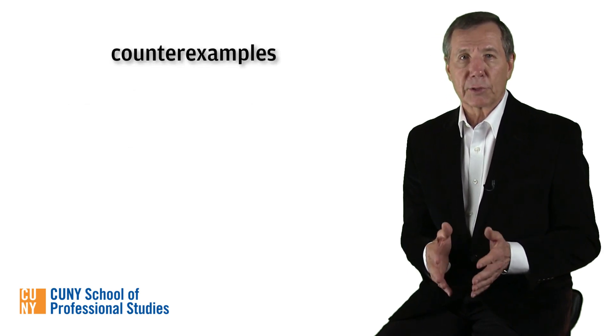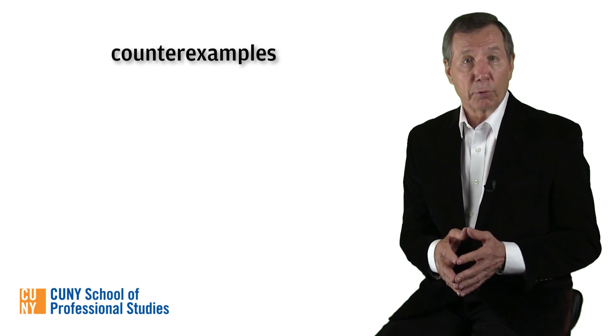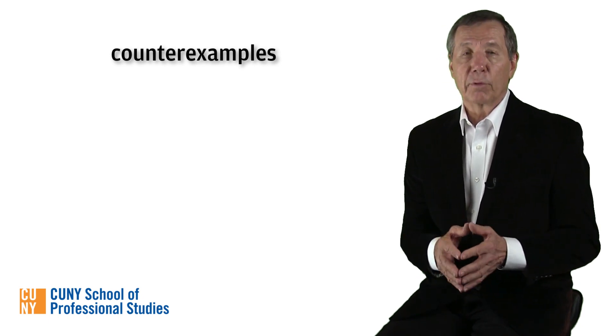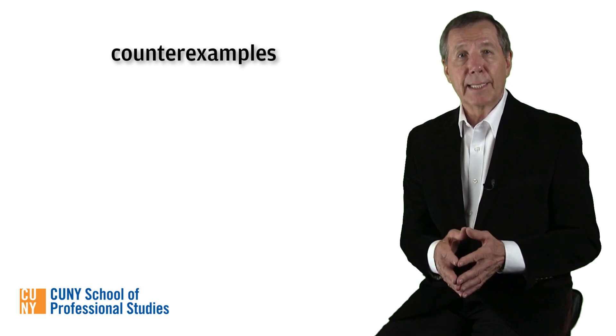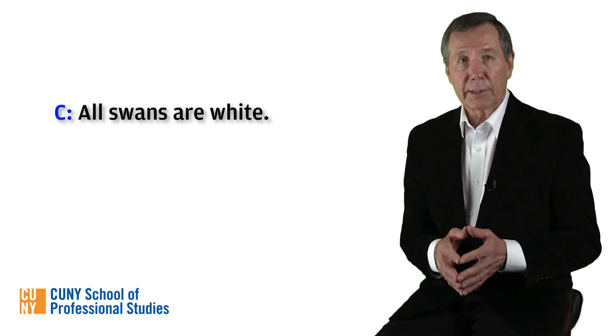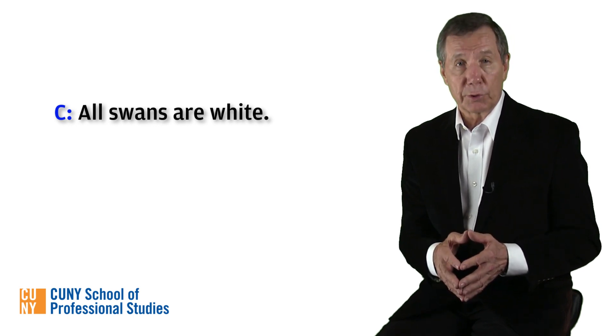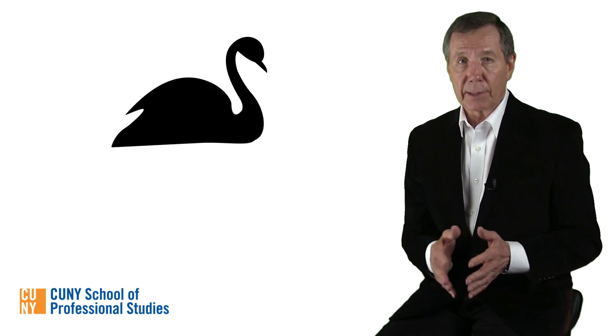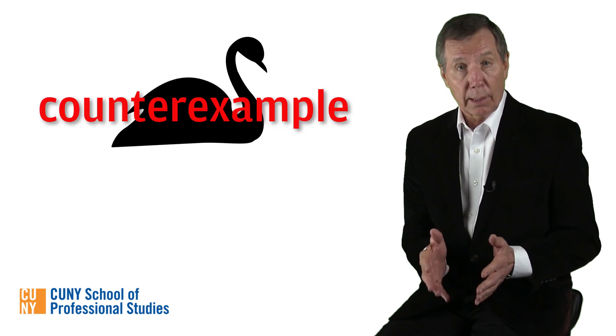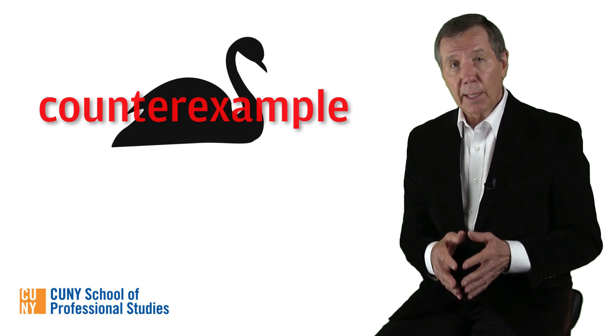Here's where counterexamples, which we introduced earlier as a means of proving deductive invalidity, again prove useful, but this time in an inductive context. We recognize that the conclusion that all swans are white is an inferential leap to a universal generalization. Therefore, if I were to observe a single non-white swan, I would have effectively disproved my conjecture by pointing out a counterexample — a swan that's not white. So any exception to the conclusion of an inductive generalization will function as a counterexample that proves my conclusion to be false.